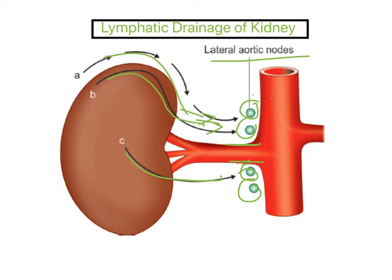That covers the lymphatic drainage, nerve supply, and renal circulation of the kidney. In the next session, we will discuss the applied anatomy and developmental changes occurring in the formation of the kidney. Thank you.